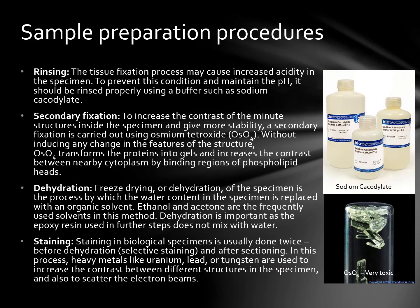Following fixation, there are a few important steps. Rinsing is very important because the tissue fixation process may cause increased acidity in the specimen. To prevent this and maintain the pH, it should be rinsed properly using a buffer such as sodium cacodylate. Secondary fixation is also important to increase the contrast of minute structures inside the specimen and to give it more stability. A secondary fixation is carried out using osmium tetroxide, which transforms the proteins into gels and increases the contrast between nearby cytoplasms by binding regions of the phospholipid heads.